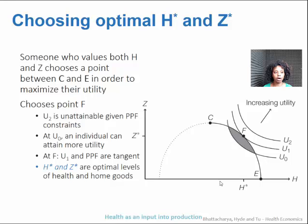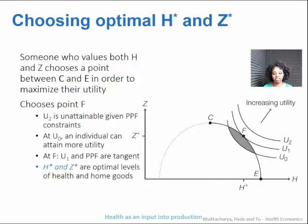The optimal levels of h and z are probably going to be somewhere between c and e. We'll pick up here in the next video.